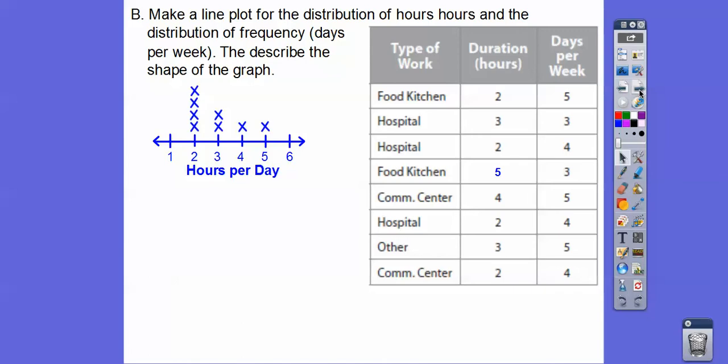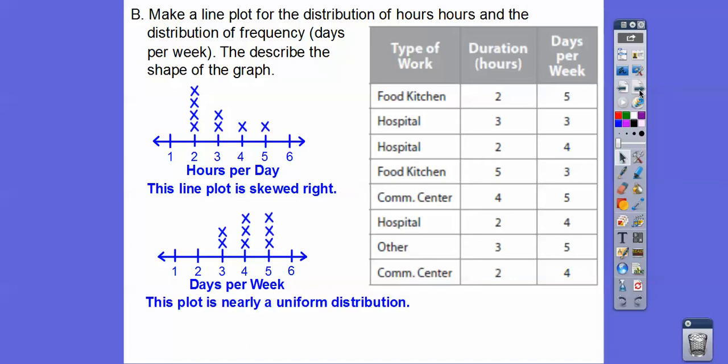And then describe the shape. That one is definitely skewed to the right. So let's do days per week. I see a couple of 3s, no 2s or 1s, a few 4s, a few 5s. So that's almost uniform distribution. If you can put like a rectangle around that, then that would be kind of a uniform distribution.